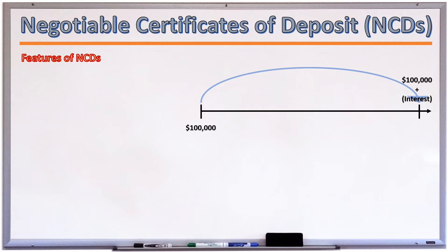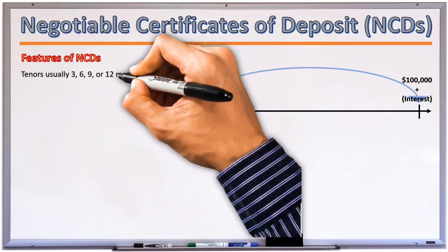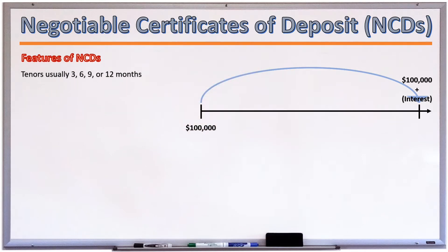NCDs are usually issued for tenors of 3, 6, 9, or 12 months. It is possible for NCDs to be issued for tenors longer than one year, in which case the instruments would pay semi-annual interest payments with the capital amount being repaid at maturity.